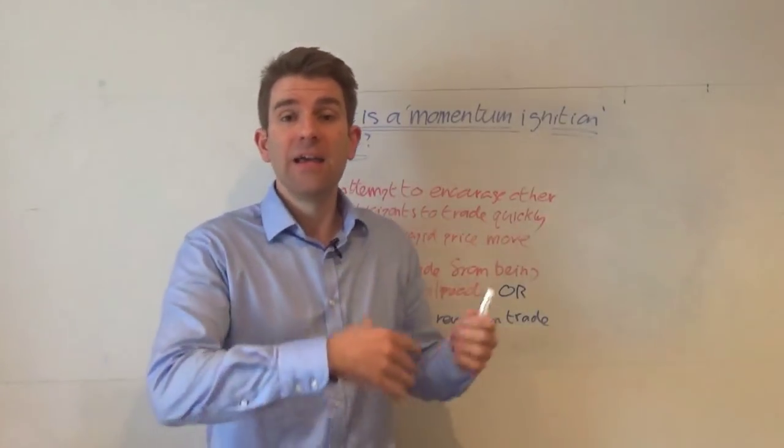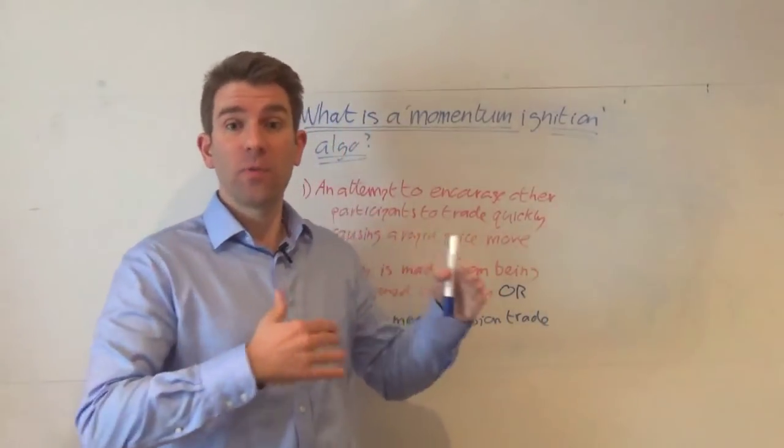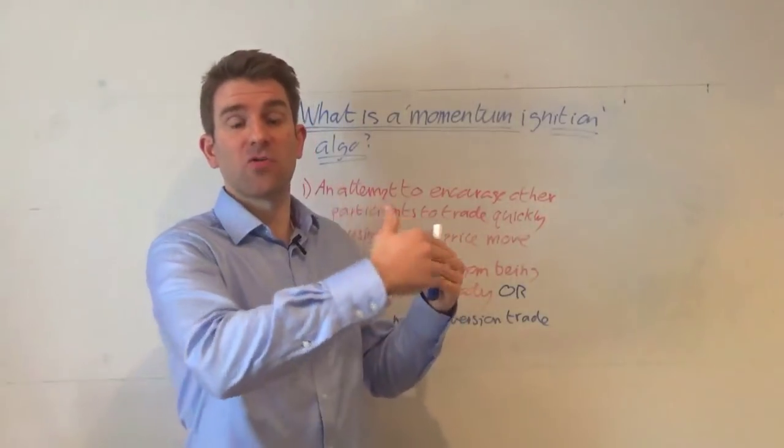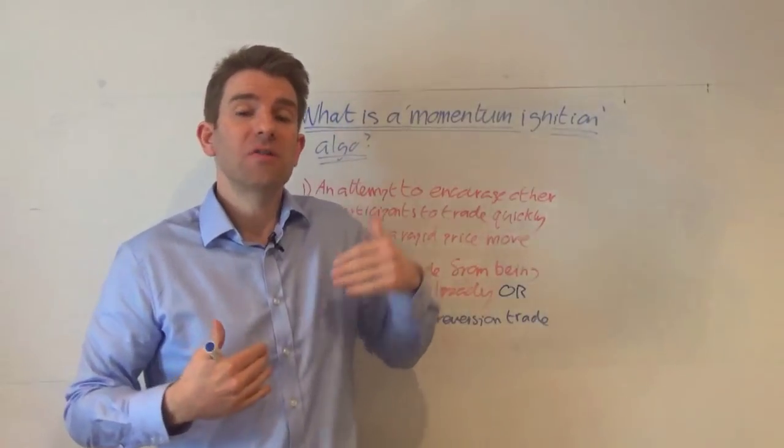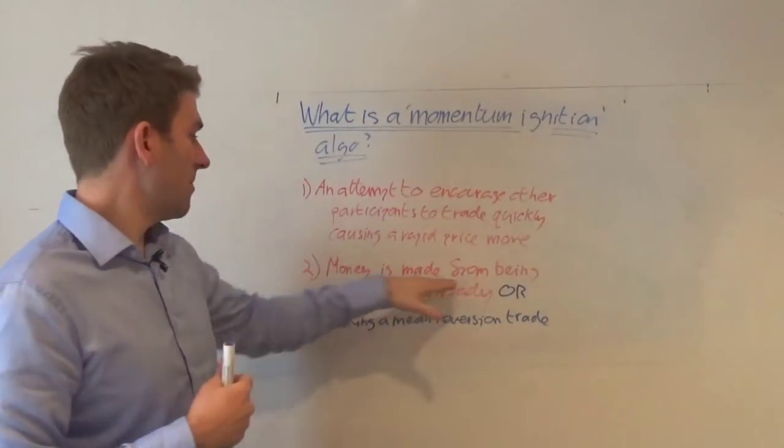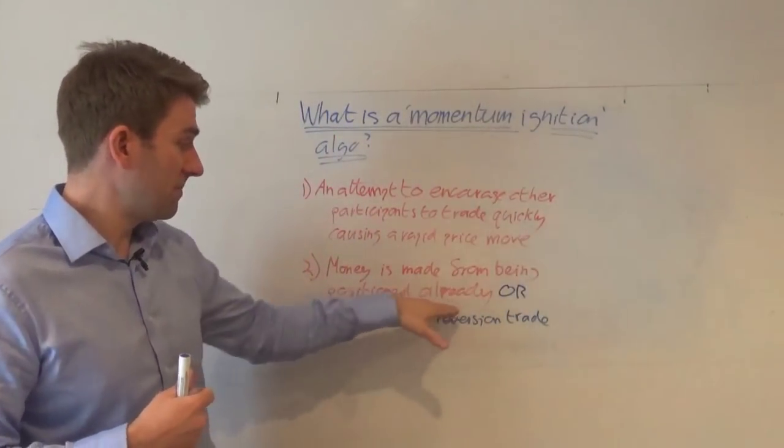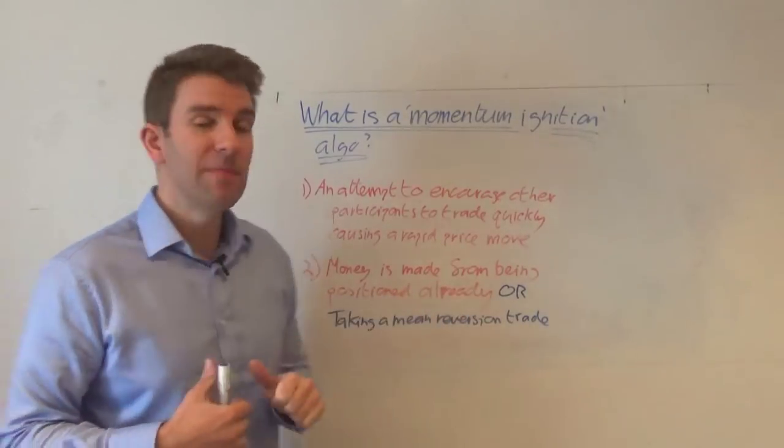Now the way they profit from that is by being pre-positioned either with the buy and they've already bought knowing that it's going to create momentum they can sell into and making that little chunk, or they're going to fade that.